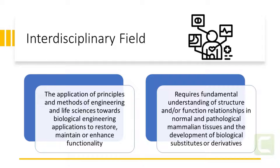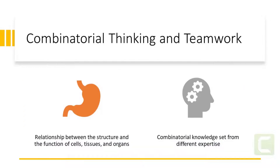It builds upon the fundamental understanding of structure-function relationships in normal and pathological mammalian tissues and the development of biological substitutes. To develop biological substitutes that aid in remodeling, a tissue engineer must first understand the relationship between the structure and the function of cells, tissues, and organs. The knowledge set of a tissue engineer is a combination of that of a biologist, material scientist, engineer, and surgeon, either as a multidisciplinary scientist or working as a team.